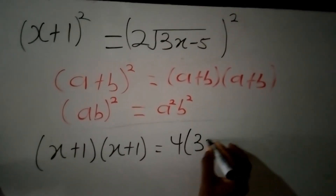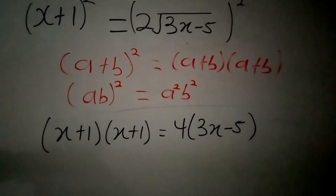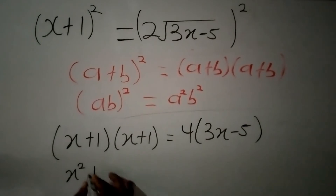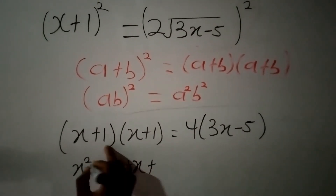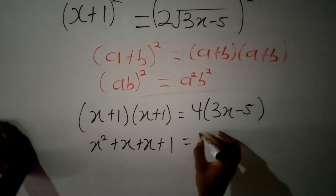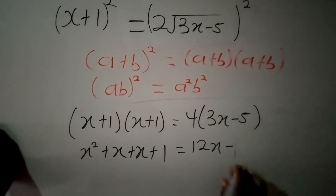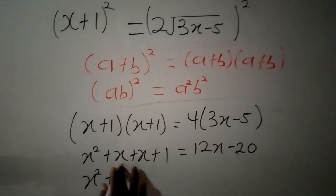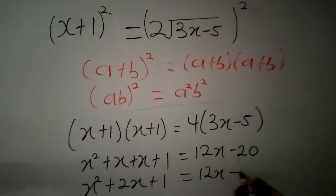Leaving behind 3x minus 5. I now expand the bracket on the left: x times x gives us x squared, x times 1 gives us x, 1 times x gives us x — so 2x total — and 1 times 1 gives us 1. On the right, 4 times 3x gives us 12x, and 4 times negative 5 gives us negative 20. So I have x squared plus 2x plus 1 equal to 12x minus 20.